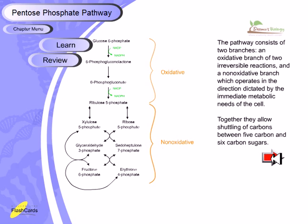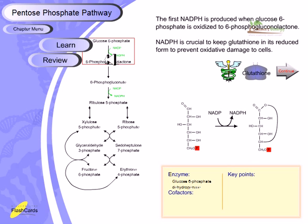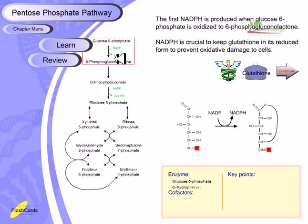The first NADPH is produced when glucose-6-phosphate is oxidized to 6-phosphogluconate. This is an important step because it is the first step incorporating NADP+ to produce NADPH. NADPH is crucial to keep glutathione in its reduced form to prevent oxidative damage to the cell.